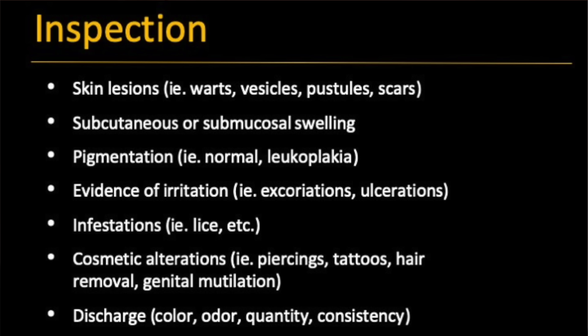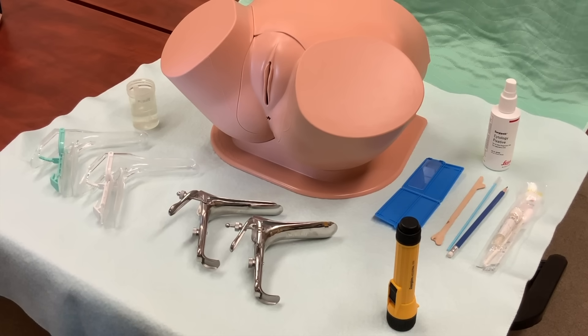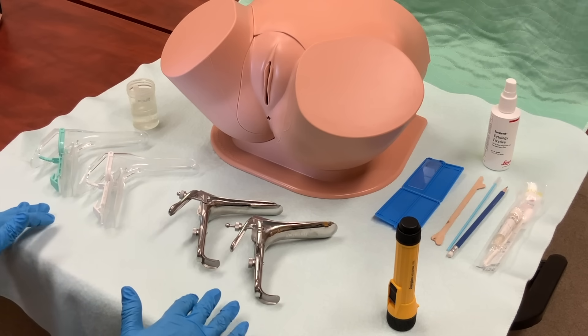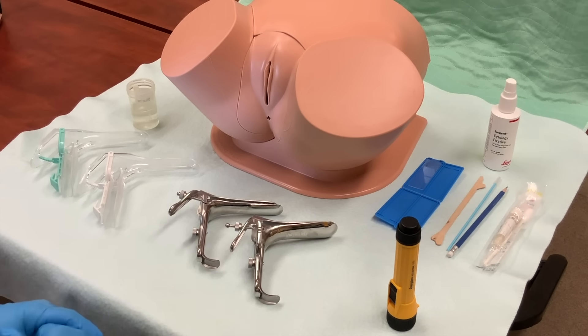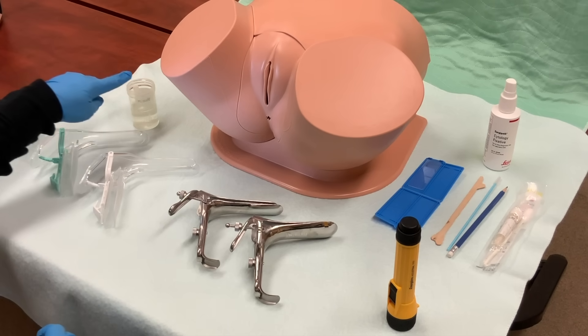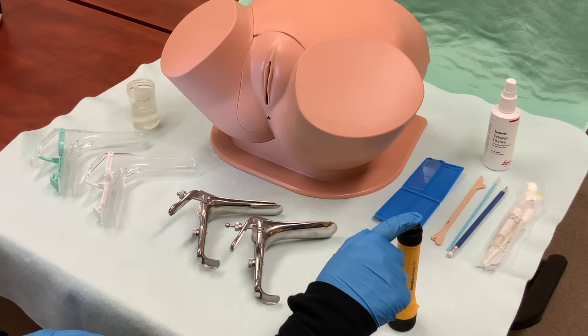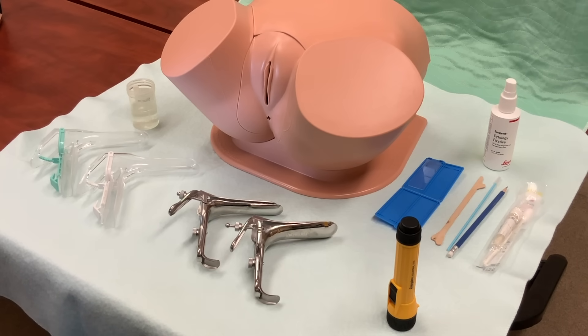This concludes the inspection of the external genitalia. When starting the inspection of the internal genitalia, it's very important to have all your equipment ready at the bedside. This would include light source, a type of speculum that is appropriate for your patient, lubricant — and water is generally the preferred lubricant if a pap smear is to be performed — as well as a good light source for every pelvic exam.